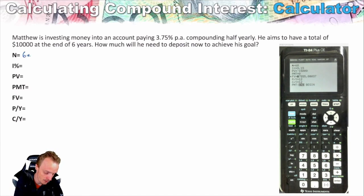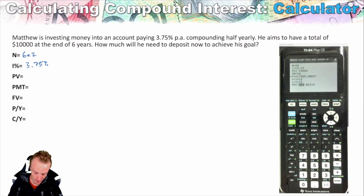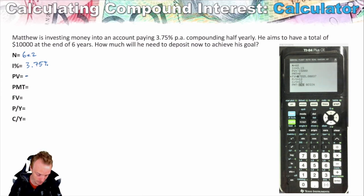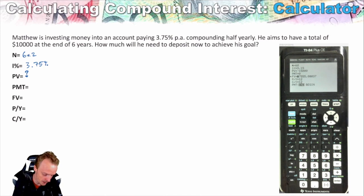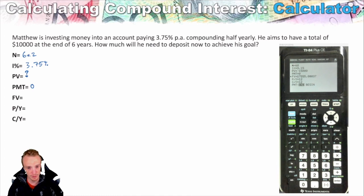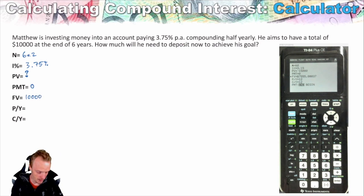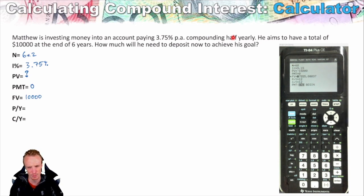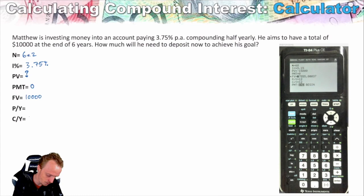The interest rate is 3.75%. The present value we don't know — that's what we're trying to find. PMT is zero. For the future value, this is really important: at the end, you're taking money from the bank, not giving it, so it's going to be a positive $10,000. P/Y and C/Y I keep the same — because it's compounding half-yearly, that's twice per year, so both are 2.